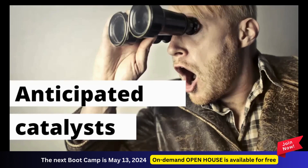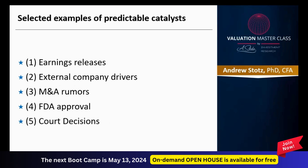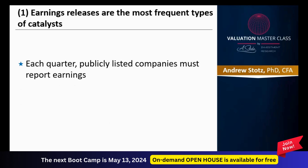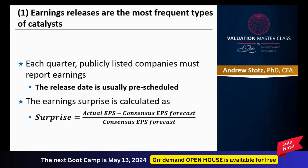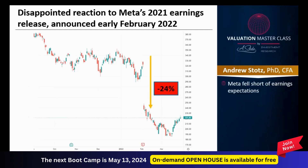We start with anticipated catalysts — we're looking ahead at things we know are coming. It could be earnings, external company drivers, M&A, FDA approval, court decisions, and the like. Each quarter, publicly listed companies must report earnings. The release date is usually pre-scheduled and the earnings surprise is calculated as the actual EPS announced minus consensus EPS, divided by consensus. Here we can see a disappointed reaction to Meta's 2021 earnings release, which was announced early in February 2022 — you can see it went down.